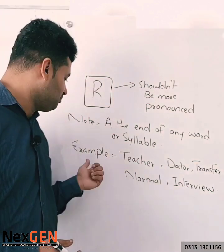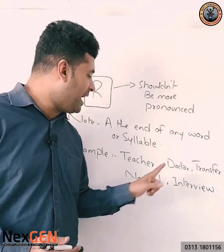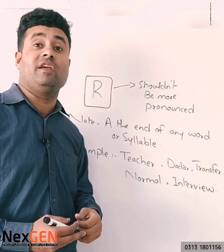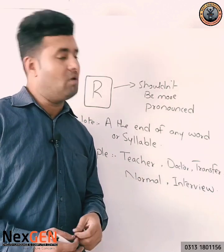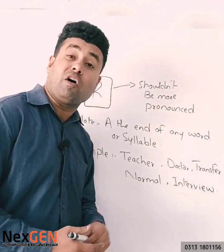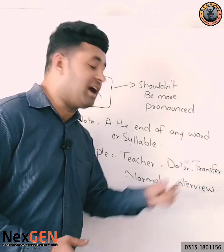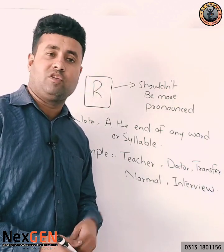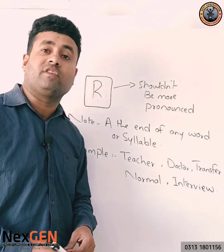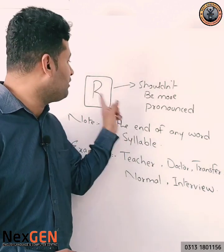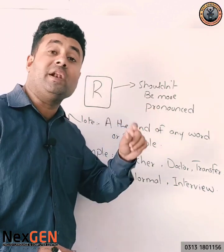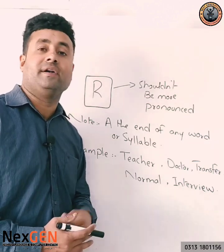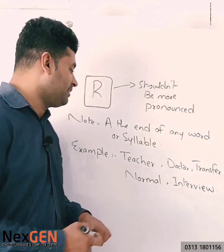For example: 'teacher' — this R shouldn't be more pronounced. Not 'teacher', not 'doctor', not 'transfer'. We say 'I want to deliver two packets.' Sometimes R is even silent — like in 'father', 'mother', 'brother', 'transfer', 'deliver', 'performer'.